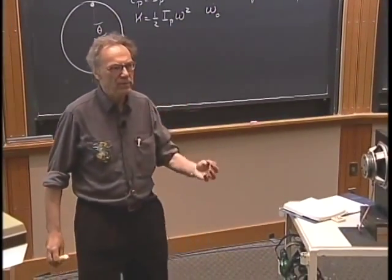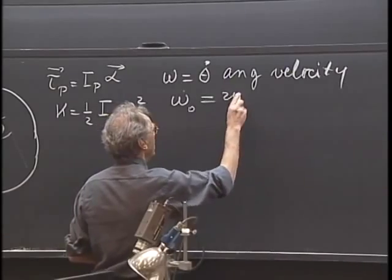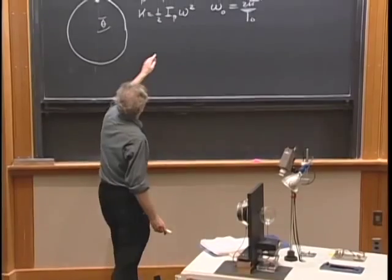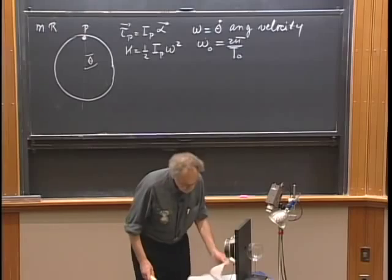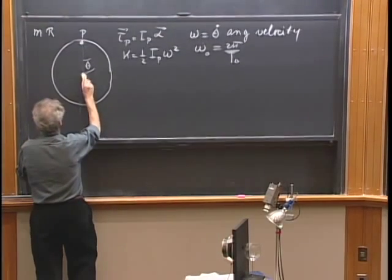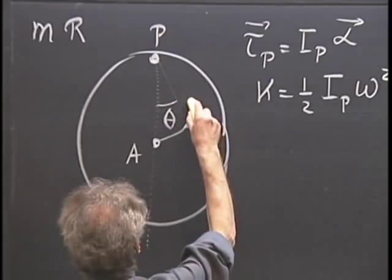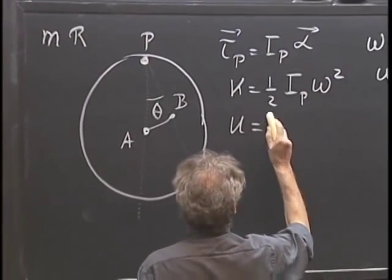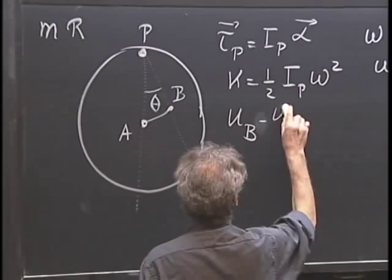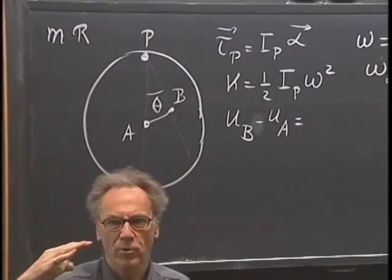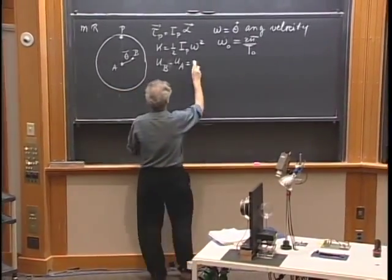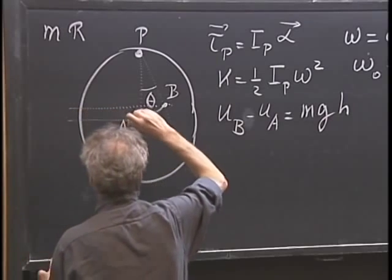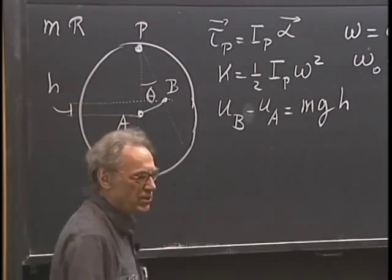I will give that a zero now to distinguish it from omega, which is the angular frequency. The angular frequency is a constant of the motion, and that is two pi divided by T zero, if T zero is the period of oscillation. So this is the kinetic energy, and this is the square of the angular velocity. Then we have potential energy. Let this be point A, and when we are here, the center of mass is at point B, so the potential energy difference equals MGH — H being the difference in height between point B and point A.